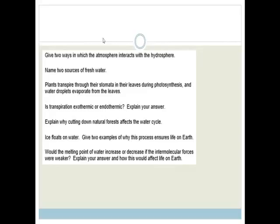So it says, give two ways in which the atmosphere interacts with the hydrosphere. Now, the atmosphere is your air, right? And your hydrosphere is everything to do with water. So basically we're talking about the whole part of the water cycle. So we're looking at condensation, precipitation, evaporation, anything like that would be how the atmosphere interacts with the hydrosphere.